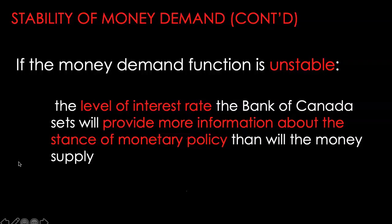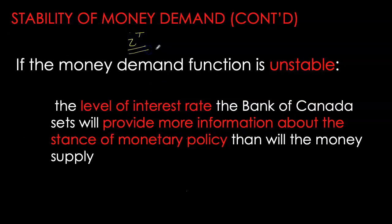With an unstable money demand function and high financial innovation reducing the central bank's ability to control monetary aggregates accurately, most central banks are moving towards interest rate targets. Interest rate targets reveal information about the stance of monetary policy. While inflation is tied to money growth in the long run, interest rates are the tool policymakers use to stabilize inflation in the short run.